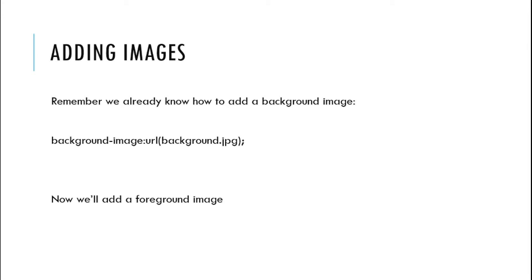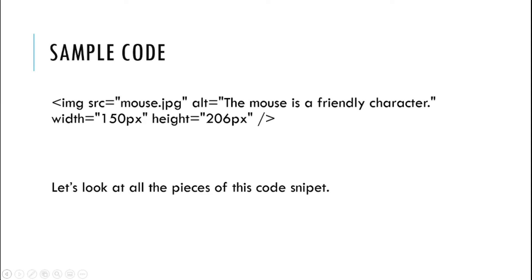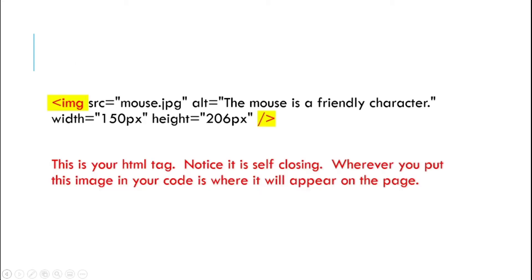We already knew how to add a background image — that's what it looks like. Here's sample code for adding just an image to our page, not a background image, but one that the text can wrap around and that we will put into our HTML code wherever we would like it to appear. First you have the actual HTML tag — this is the image tag. Notice it is self-closing, and wherever you put it in your code, that's where your graphic will appear on the page.